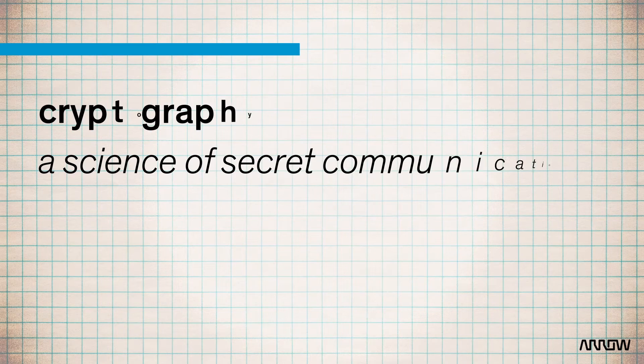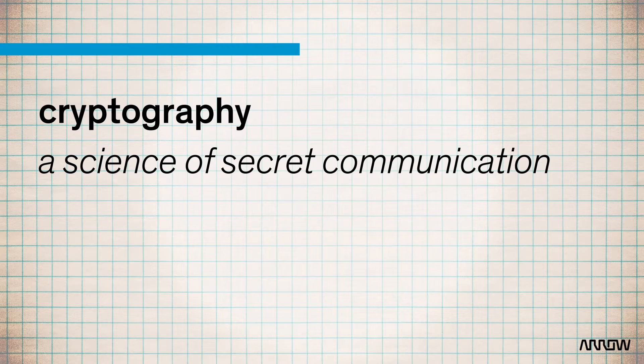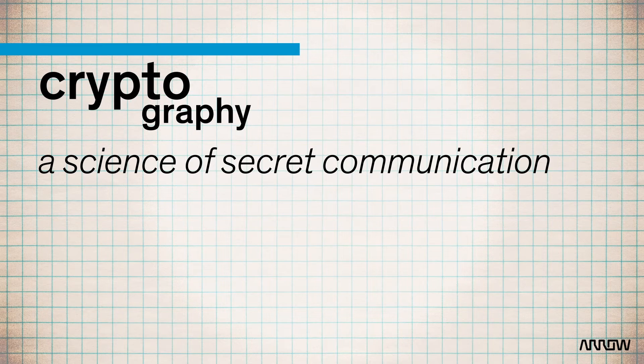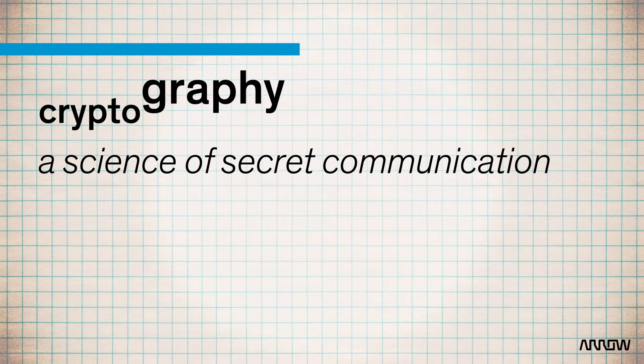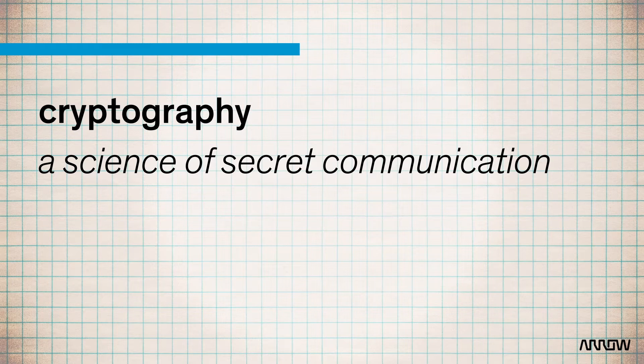Hi everybody, my name is JJ Menuh and I'm an application engineer at Arrow Electronics. Today we'll give a short history of cryptography. Cryptography is the science of secret communication. The etymology comes from the Greek language where 'crypto' means hidden or secret, and 'graphy' denotes a process or form of drawing, writing, or describing.